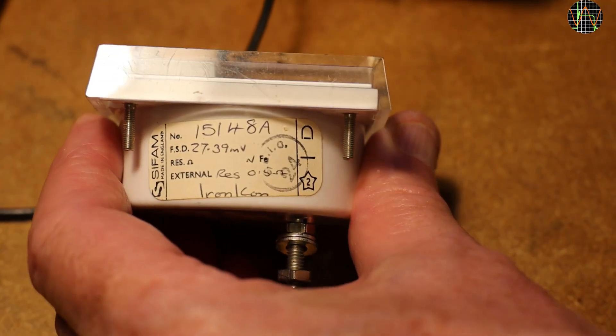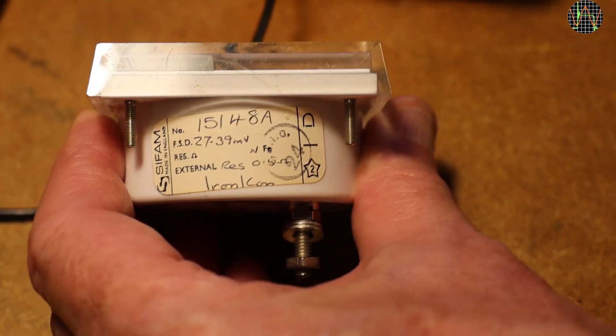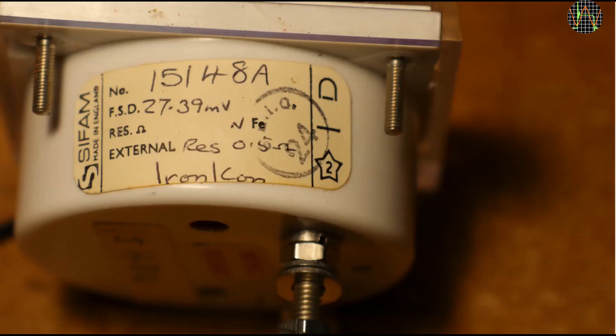There is a sticker on the side of the instrument and I pause for a moment so you can read it. FSD means Full Scale Deflection. So when 23.39 mV is applied, the needle should show full scale. I bet that 23.39 mV is the voltage produced by J-type probe at 500 degrees Celsius.